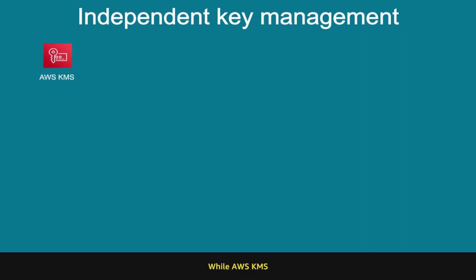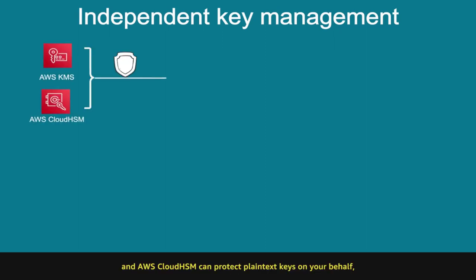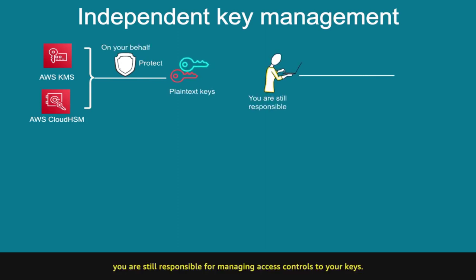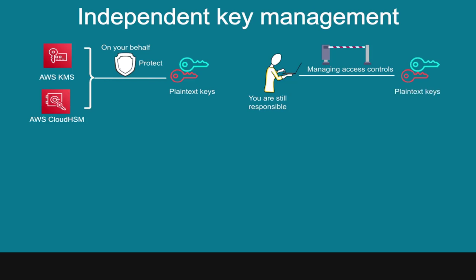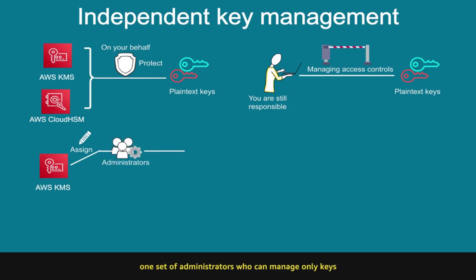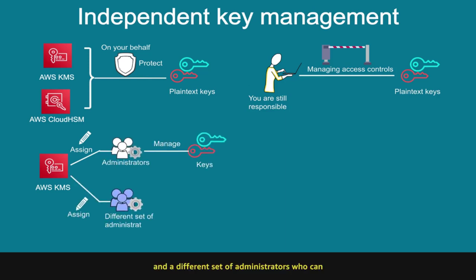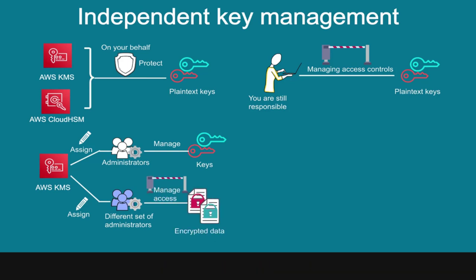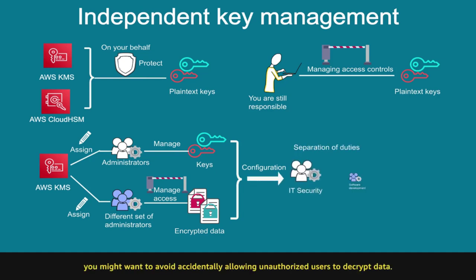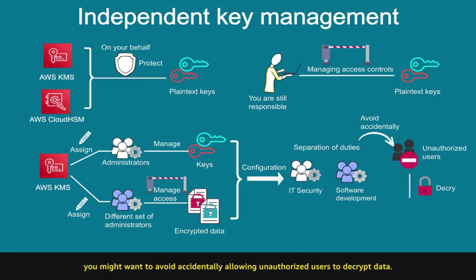While AWS KMS and AWS Cloud HSM can protect plaintext keys on your behalf, you are still responsible for managing access controls to your keys. Using AWS KMS, you can assign one set of administrators who can manage only keys, and a different set of administrators who can manage only access to the underlying encrypted data. This configuration helps provide the separation of duties you might want, to avoid accidentally allowing unauthorized users to decrypt data.